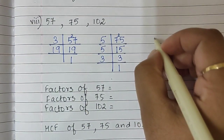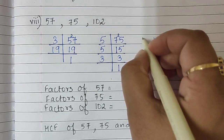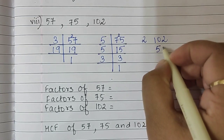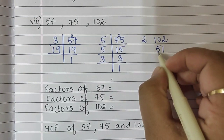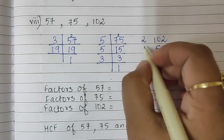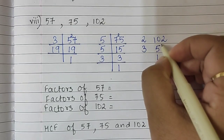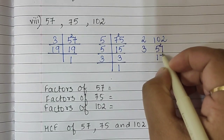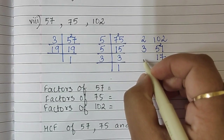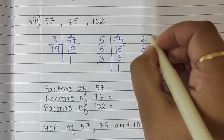Then there is 102. It ends with 2, that is an even number, so we begin with 2. 2 fifty-ones are 102. Now 51 is divisible by 3, so we write 3. 3 seventeens are 51. And 17 is a prime number, so we write 17 ones are 17.